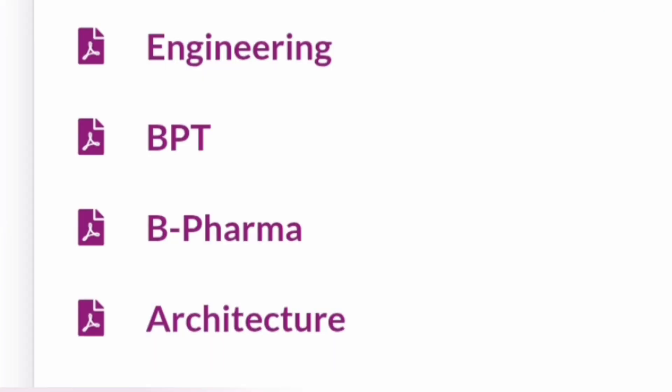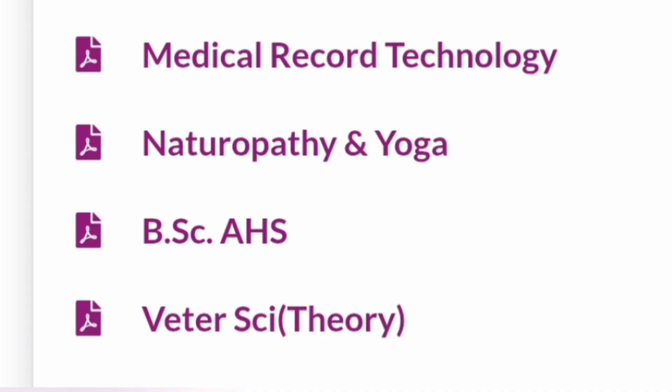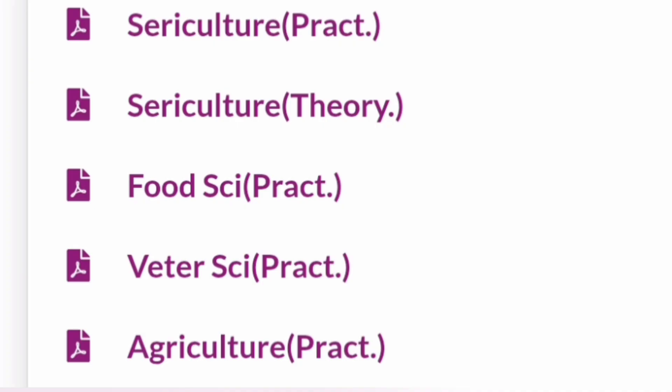It basically gives all the different types of PDFs with the complete seat matrix for engineering, BPT courses, B Pharma courses, and architecture courses through KEA. It also provides PDFs with the vacant seat matrix for medical record technology, naturopathy and yoga, BSc animal husbandry, and veterinary science theory. For each of these, a separate seat matrix is released.